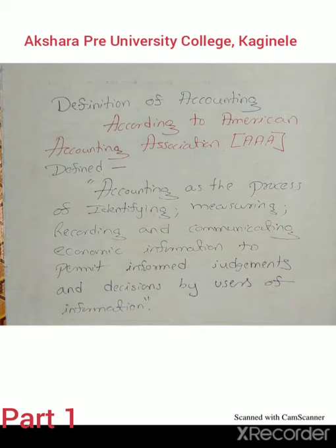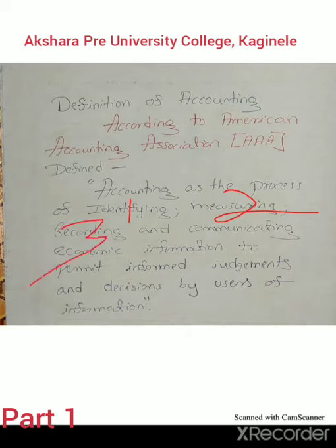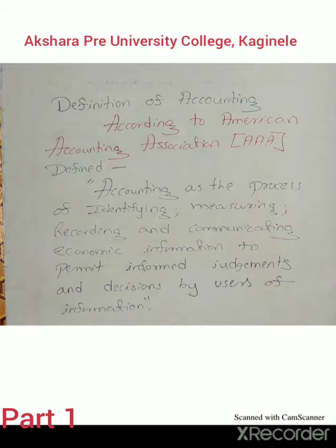So accounting is the process of identifying — that is the first process, identification. After identification, the second process is measuring. After measuring the financial information or financial transactions, recording is the third process and communicating is the fourth process. It is communicating pertinent information to the users, which is very helpful to take correct decisions. This is the definition of accounting.